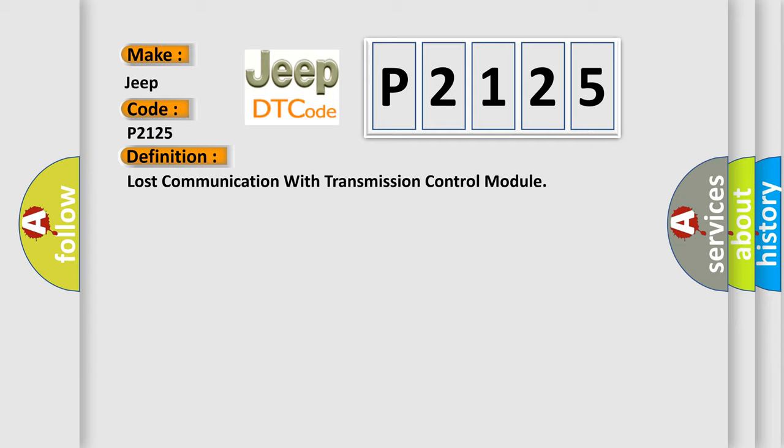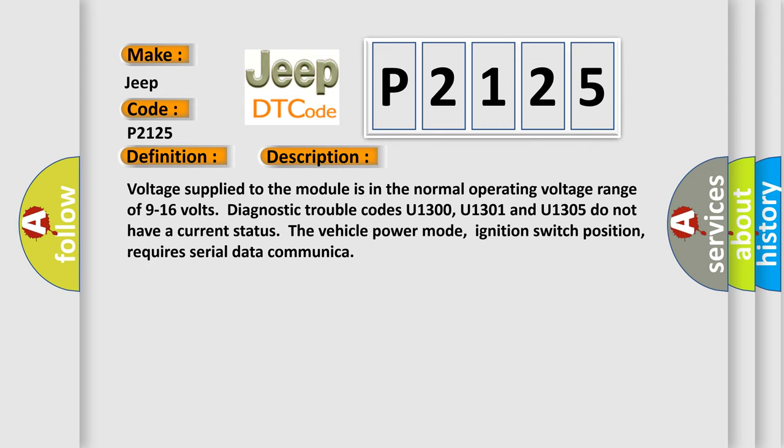And now this is a short description of this DTC code. Voltage supply to the module is in the normal operating voltage range of 9 to 16 volts. Diagnostic trouble codes U1300, U1301 and U1305 do not have a current status.